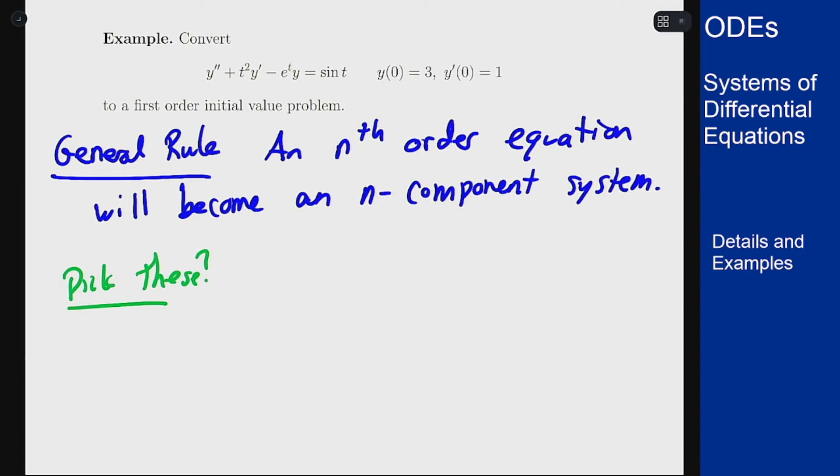We'll let our first component, which I'll call x here for the sake of contrasting variables, we'll let x, our first component, be just our normal unknown function y. So x1 is just y. Our first component of our solution is just y. It's the unknown function from above.